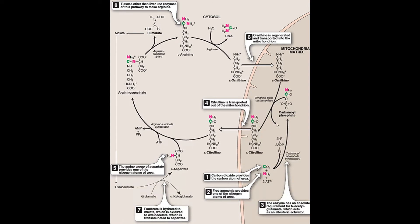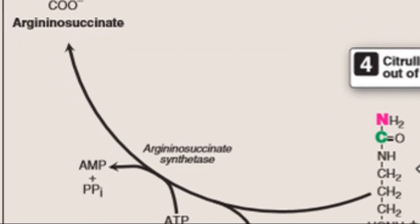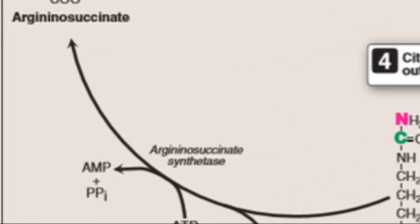Argininosuccinate synthetase combines citrulline with aspartate to form argininosuccinate. The alpha amino group of aspartate provides the second nitrogen that is ultimately incorporated into urea. So we said the first carbon is from free ammonia and the second one is from the aspartate.